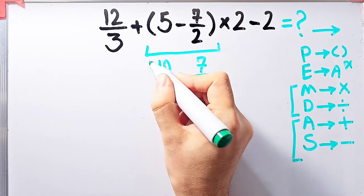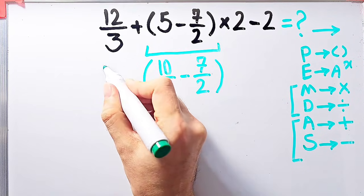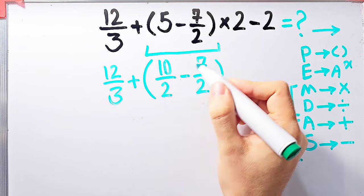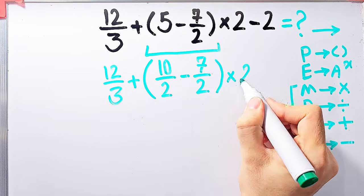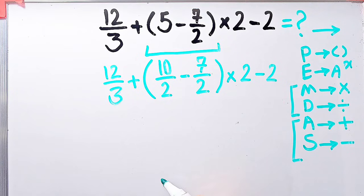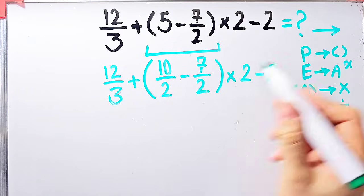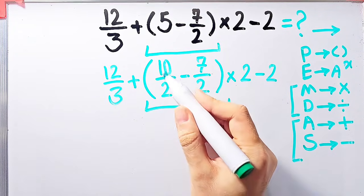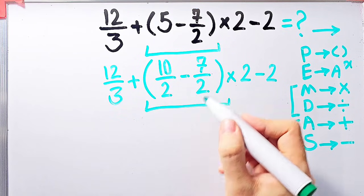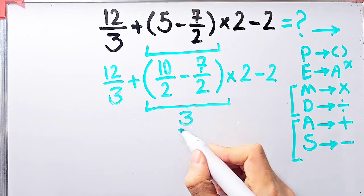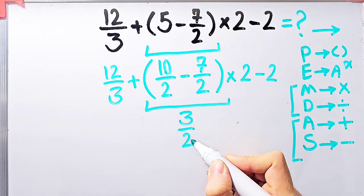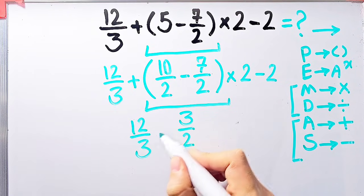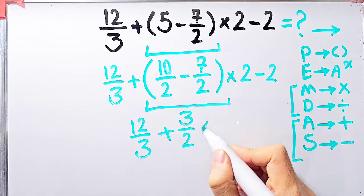Now the question is 12 over 3 plus open parentheses 10 over 2 minus 7 over 2 close parentheses times 2, then minus 2. Again we simplify the parentheses: 10 over 2 minus 7 over 2 equals 3 over 2. Now the question is 12 over 3 plus 3 over 2, then times 2, minus 2.